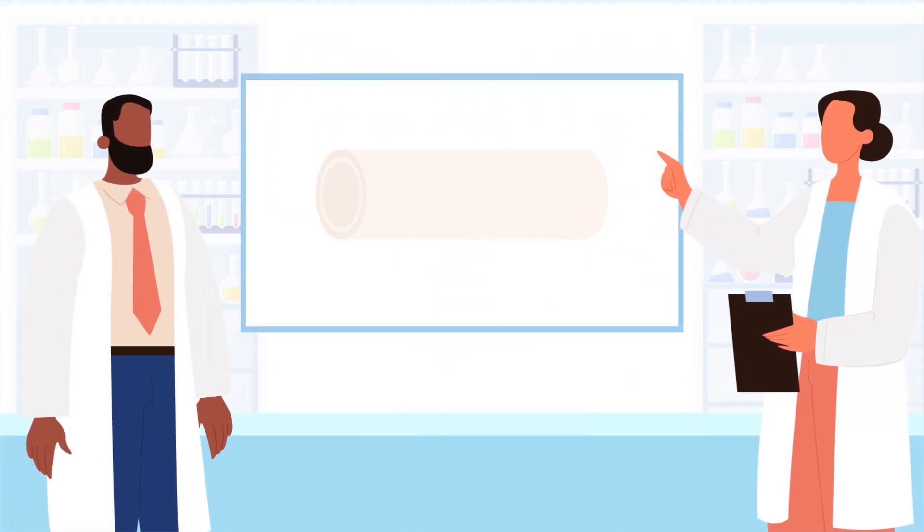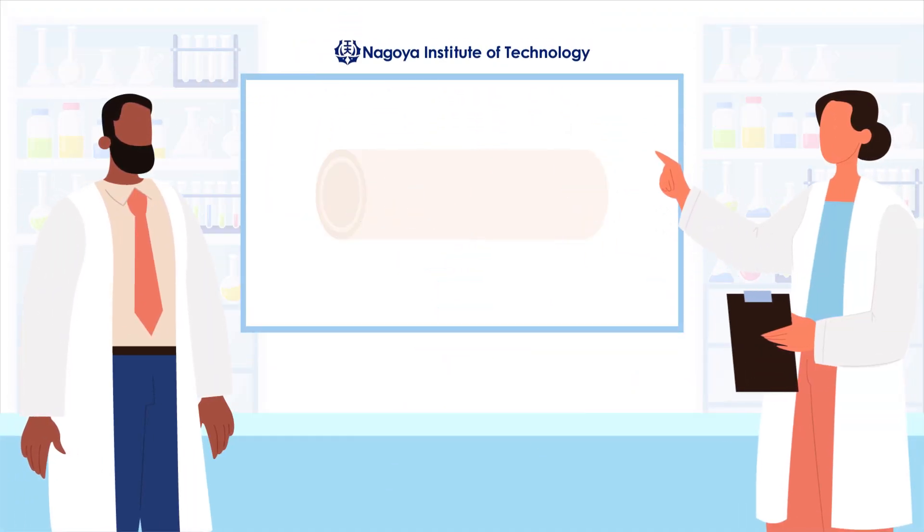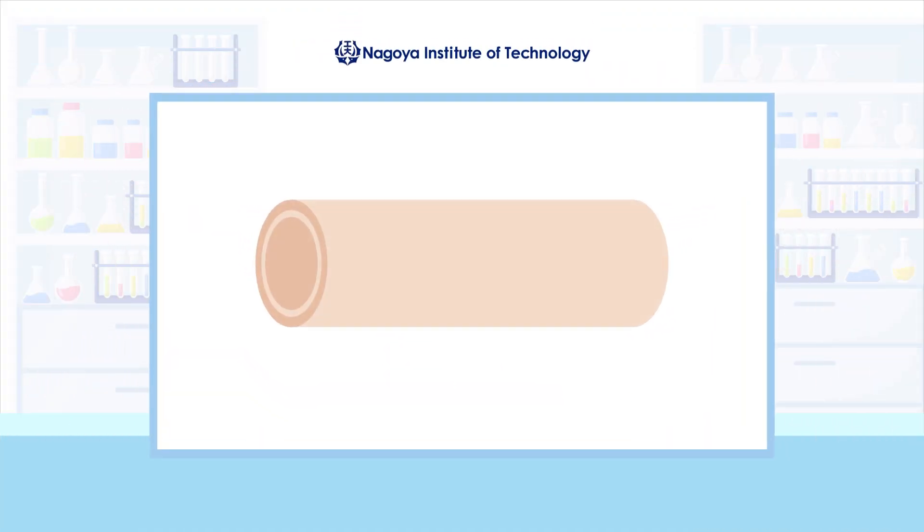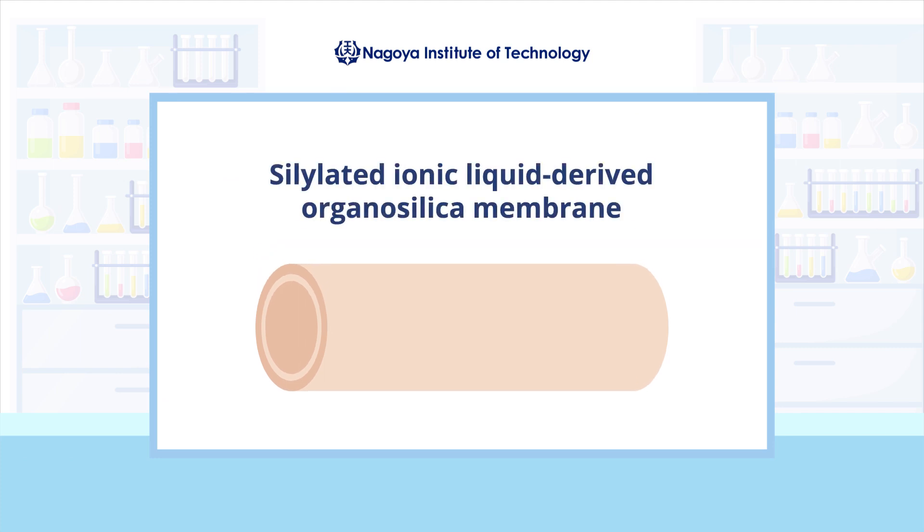In a recent study, scientists from Japan investigated the organic liquid separation properties of a cellulated ionic liquid-derived organosilica membrane in a pervaporation process.